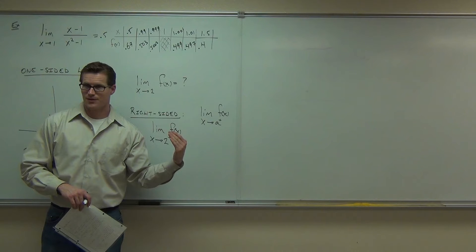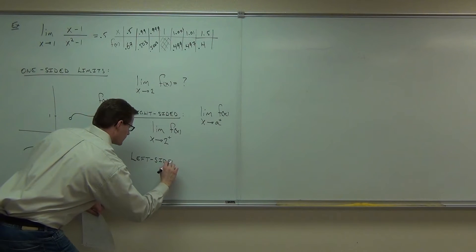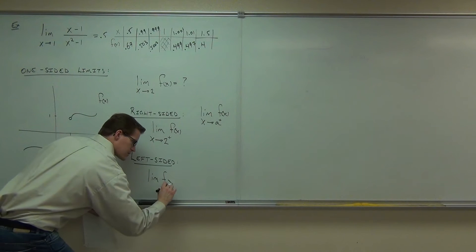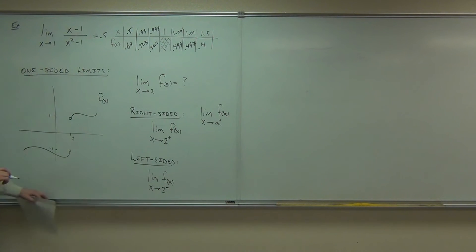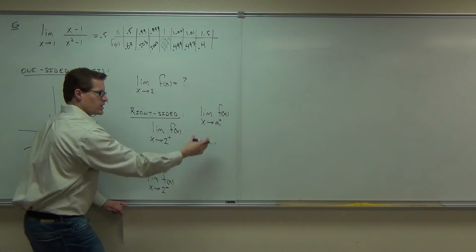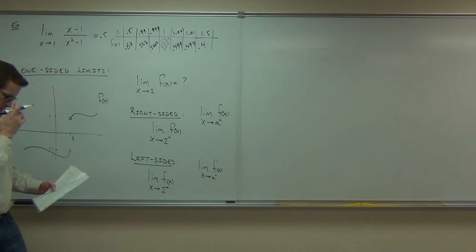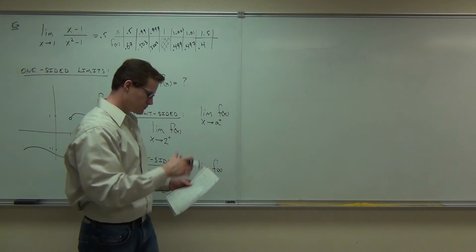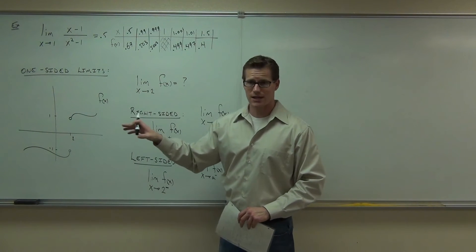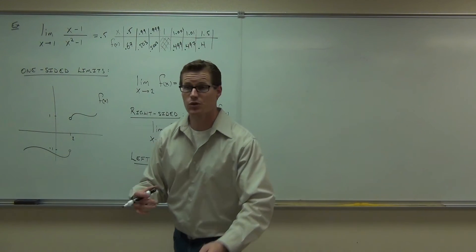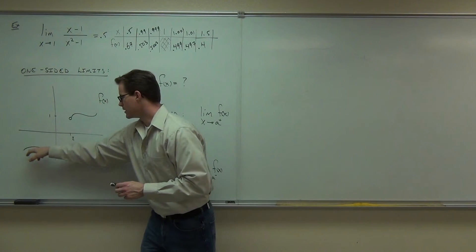What do you think a left-sided limit is going to have? A left-sided limit would be the limit of f of x as x approaches a certain number — in our case, two — and that little minus or negative superscript means from the left. In general, we'd have the same situation only from the left. Can you find the limits, both right-sided and left-sided, of this function? Let's try that together.